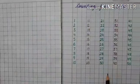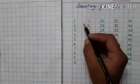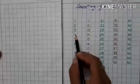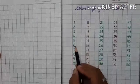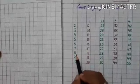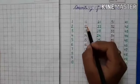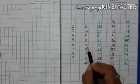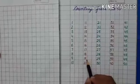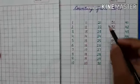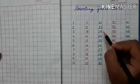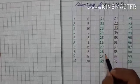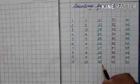I have already written numbers from 1 to 50. 1, 2, 3, 4, 5, 6, 7, 8, 9, 10, 11, 12, 13, 14, 15, 16, 17, 18, 19, 20, 21, 22, 23, 24, 25, 26, 27, 28, 29, 30.